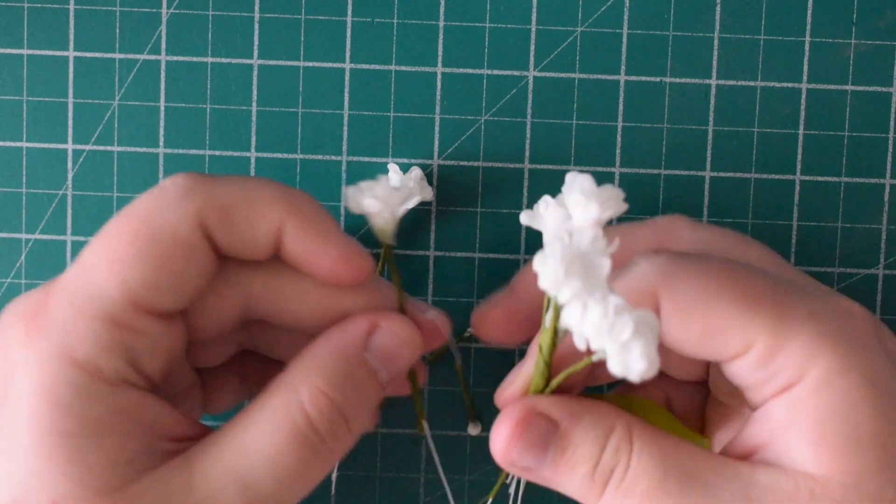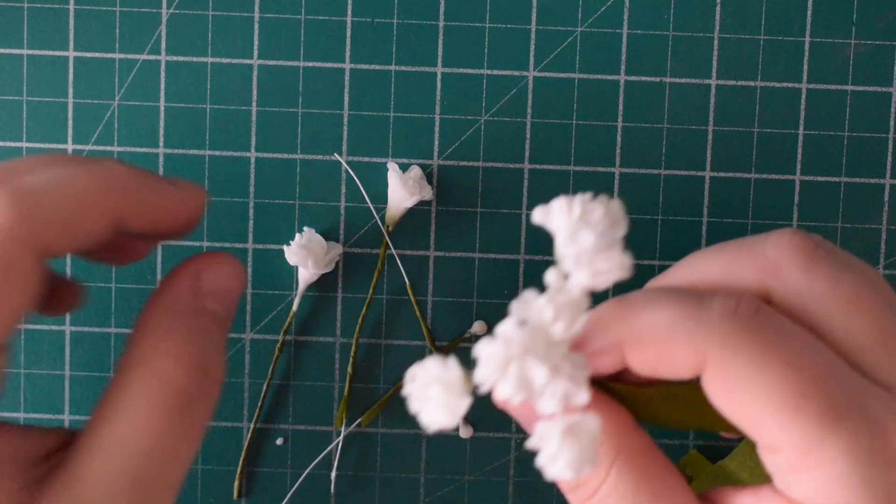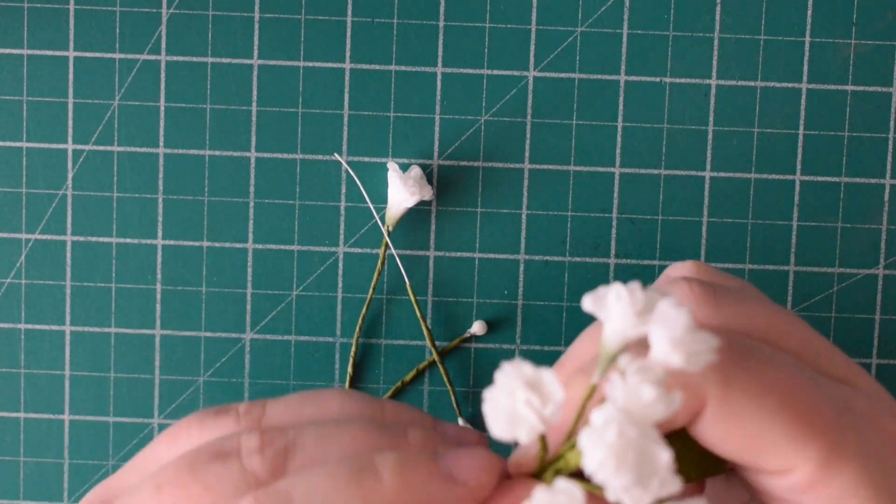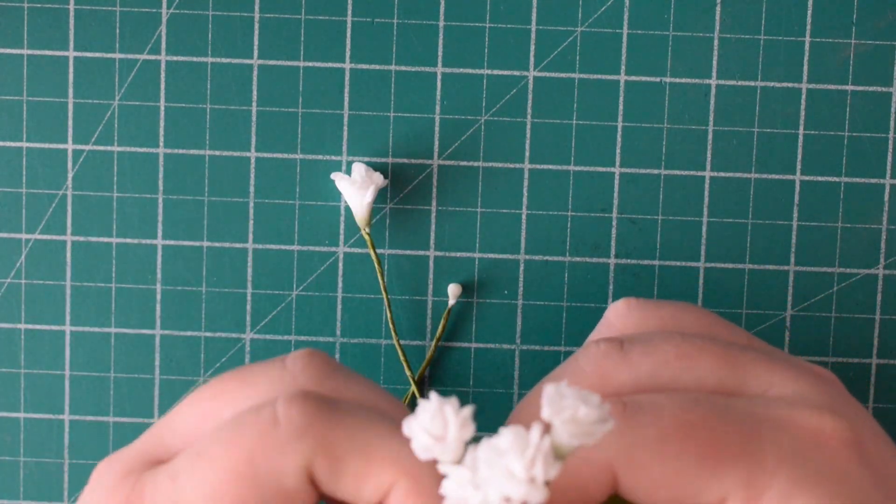Now I would tend to put them more all at the same level so that once you put it on a cake you can spread it out a little bit and it's not coming too far off the cake, but again it totally depends on the design that you're going for.